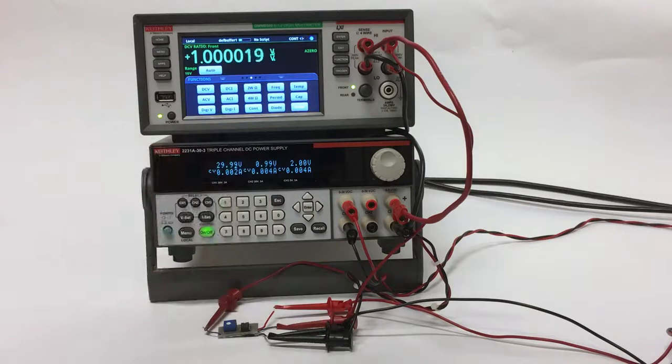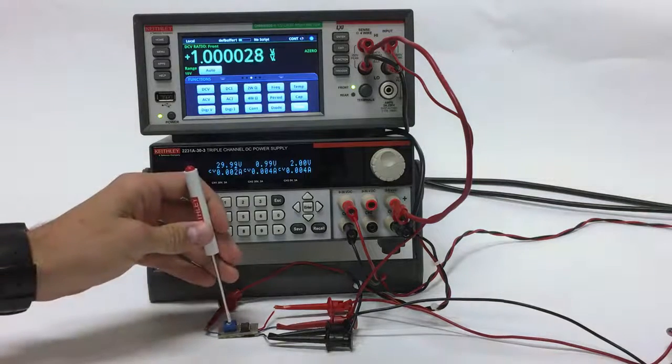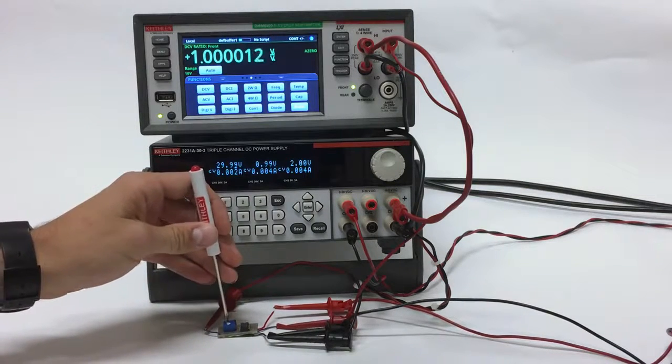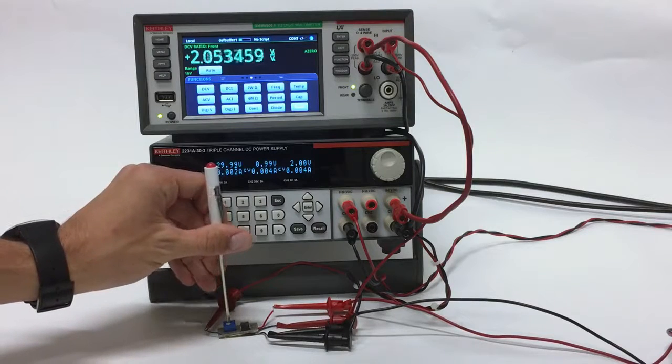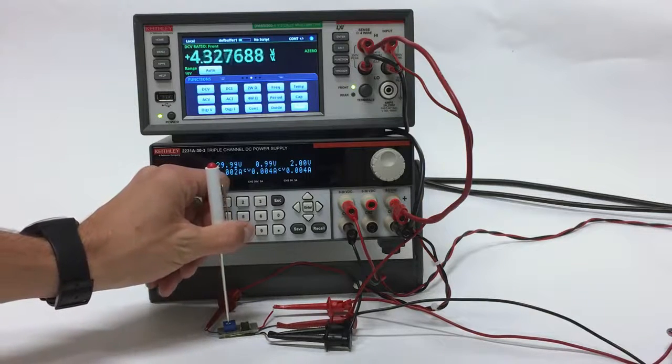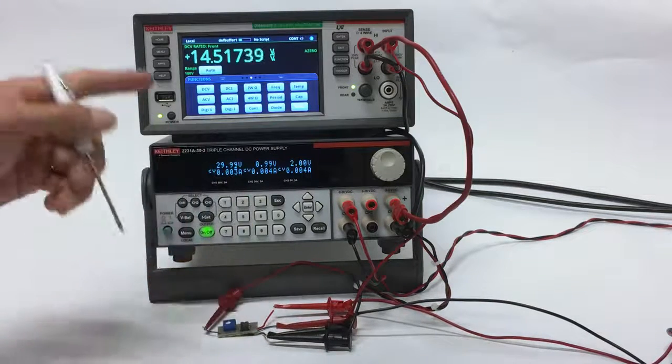Since our rail is 30 volts and our input is 2 volts, the max gain we will be able to see is around 15, which is what we see here.